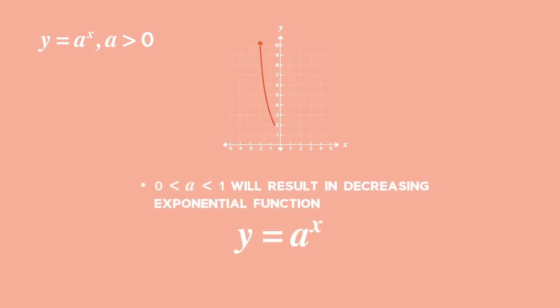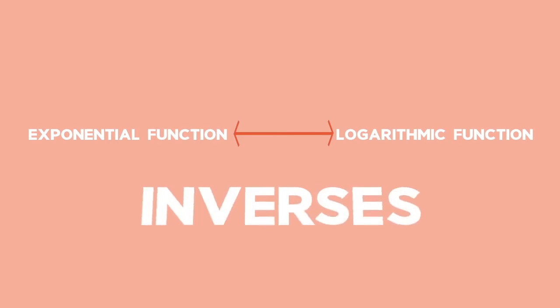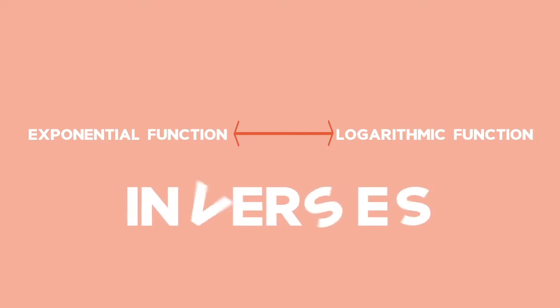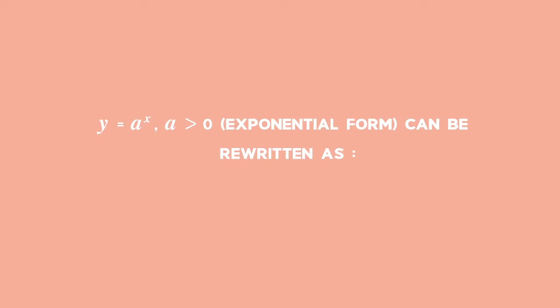If the value of a is greater than zero and less than one, this results in a decreasing exponential function. The exponential function can be reversed by the logarithmic function. Therefore, the exponential function and logarithmic function are inverses. Recall that the reflection of a graph in the line y equals x will be the graph of its inverse. If y equals a to the power of x with a greater than zero, then we can rewrite the function in its inverse log form as x equals log y base a.